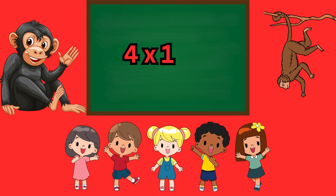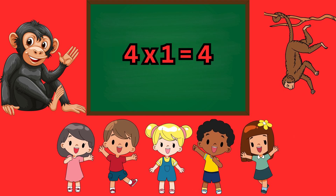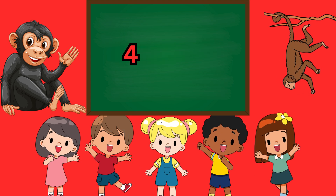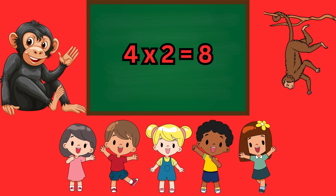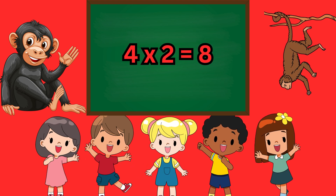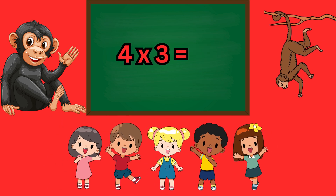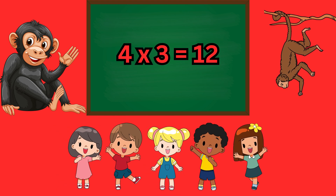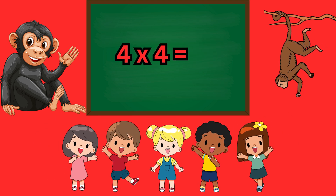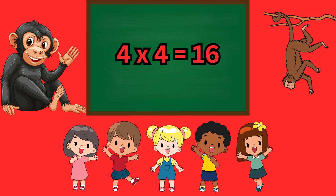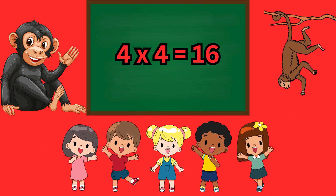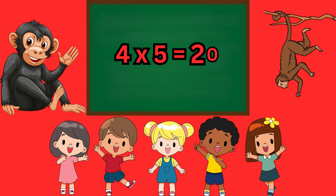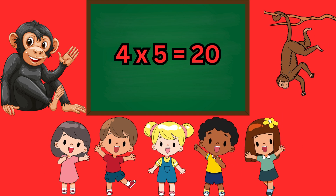4 ones are 4, 4 twos are 8, 4 threes are 12, 4 fours are 16, 4 fives are 20.